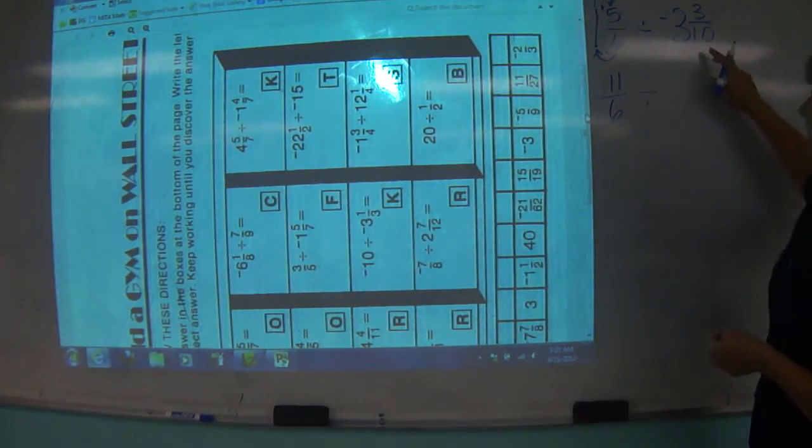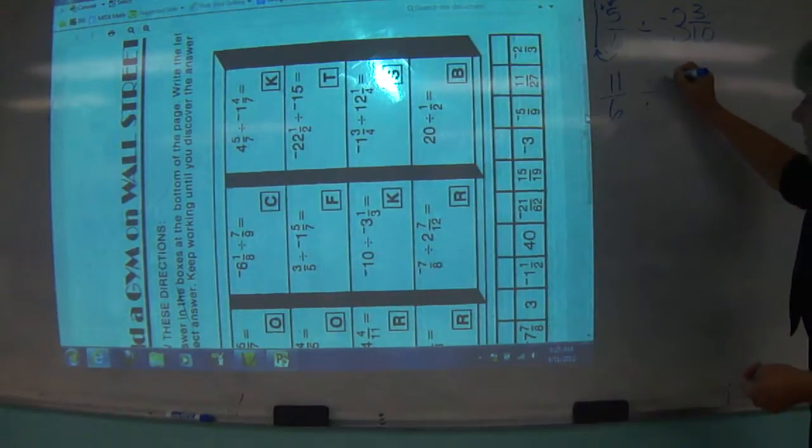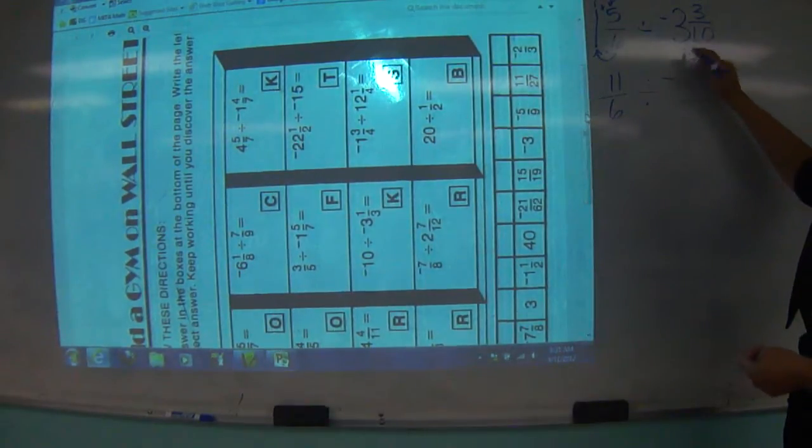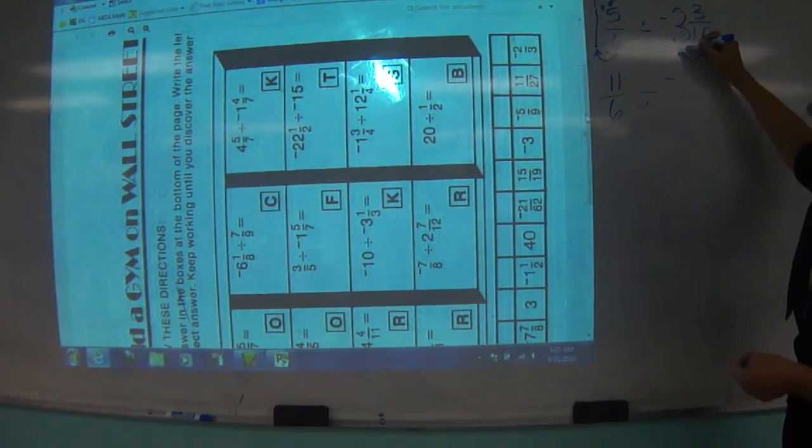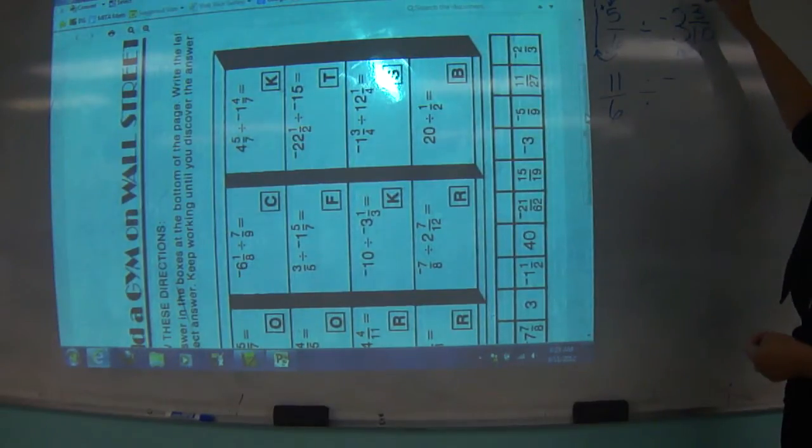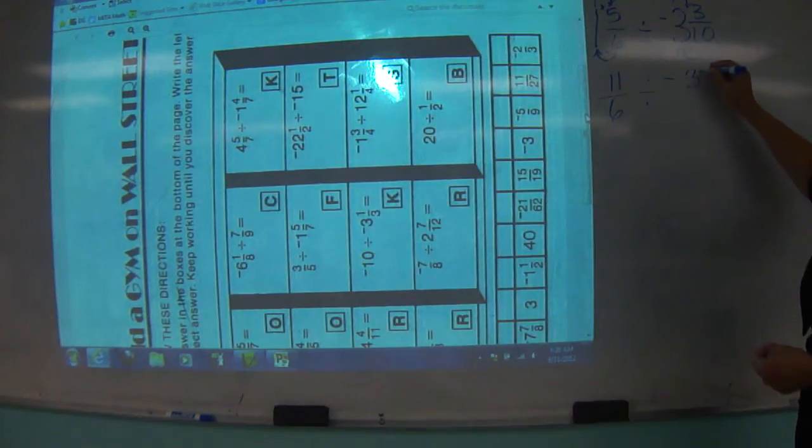I'm going to leave it as division right now. Divided by negative, 10 times 3, 30, plus 3 more. So we have 33 tenths.